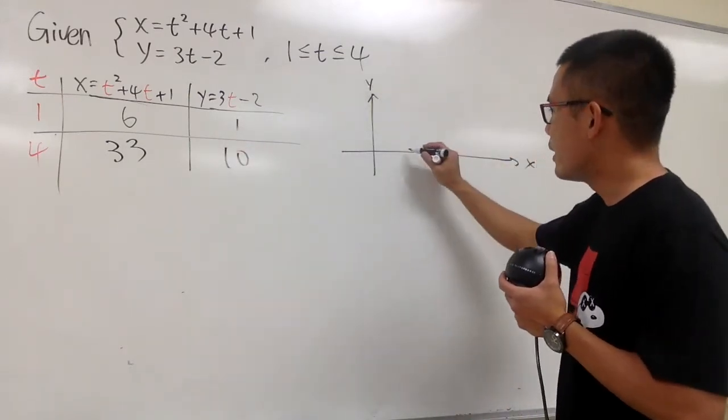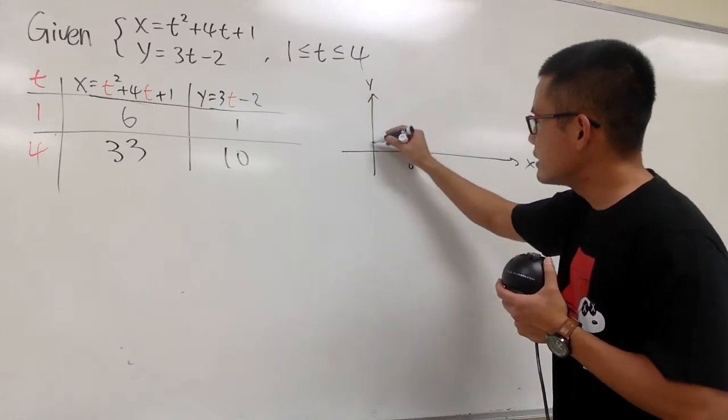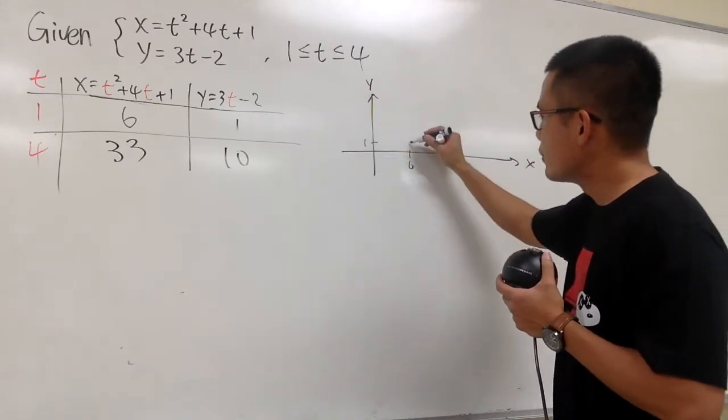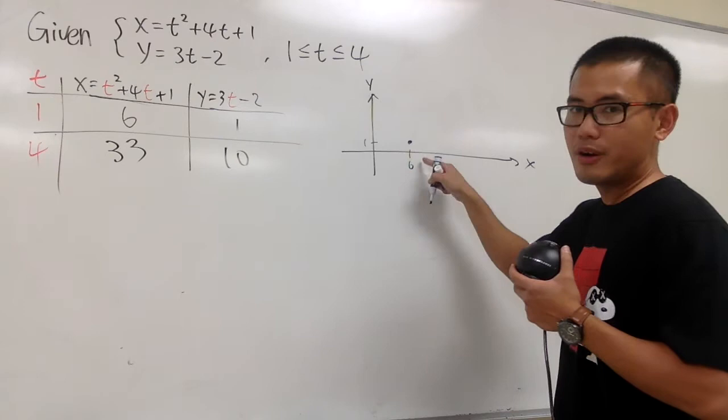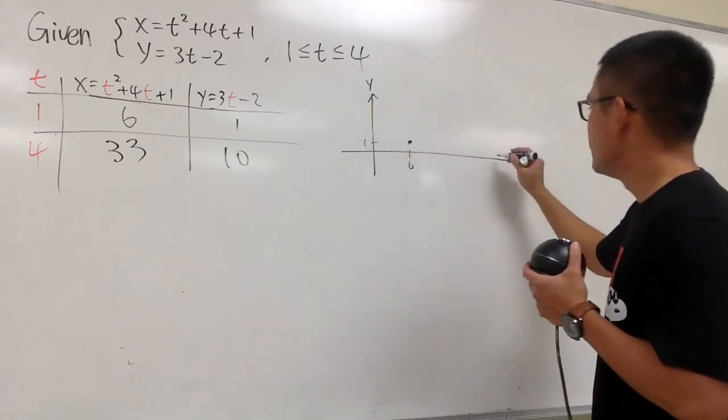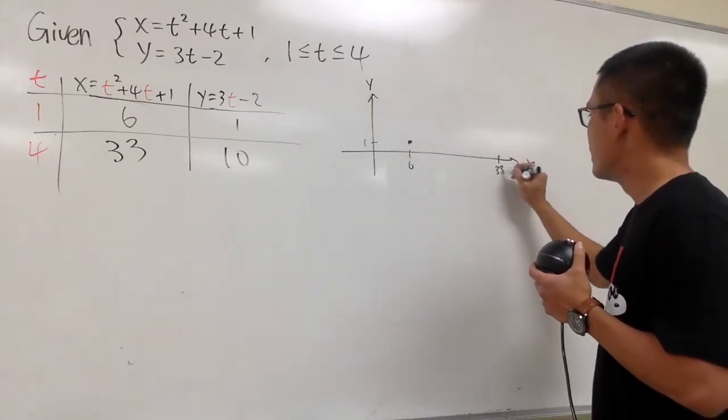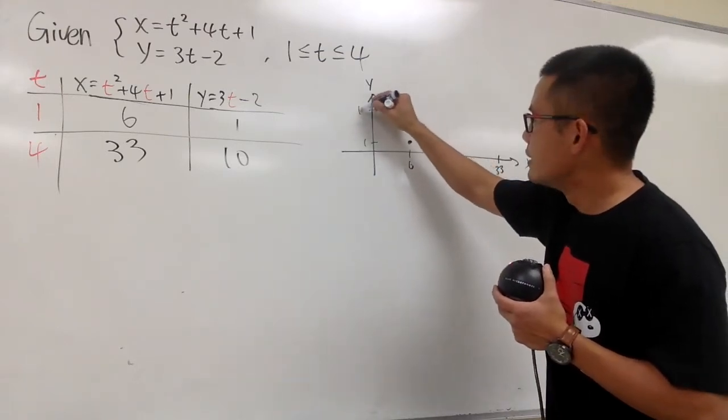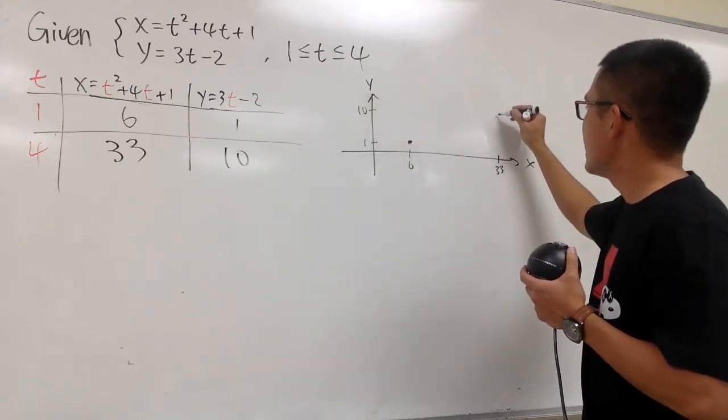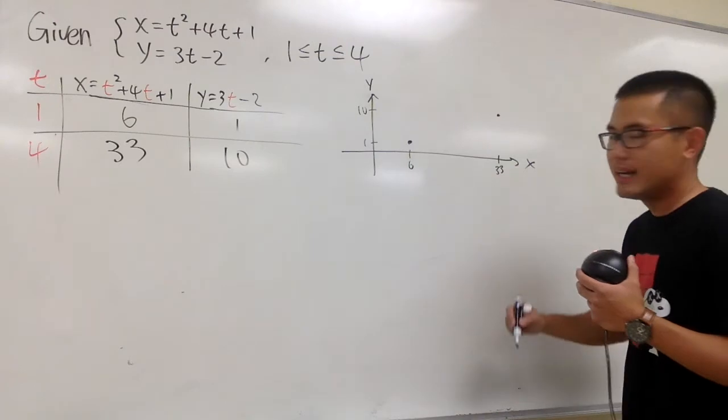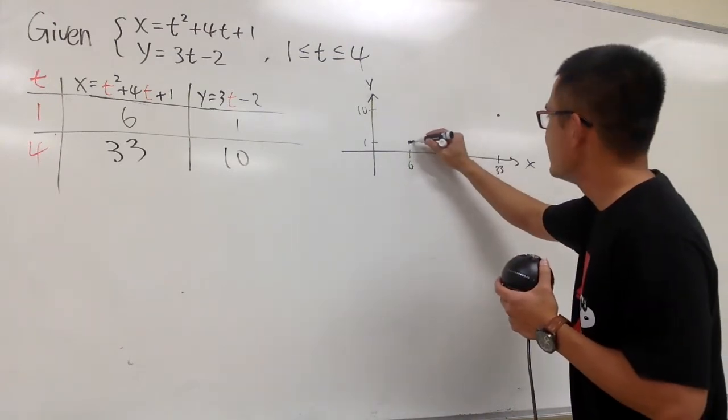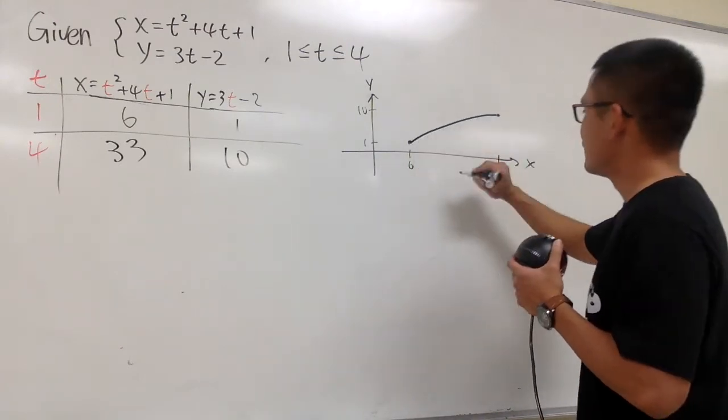And 6, 1, let me just say this is my 6 and this is my 1. So this is my starting point right here. And then I have 33, 10. Let me say 33 is right here. Now I'll draw the scale, of course. And this is my 10. So it looks like this. And if you just kind of grab it, you will have a curve like this.